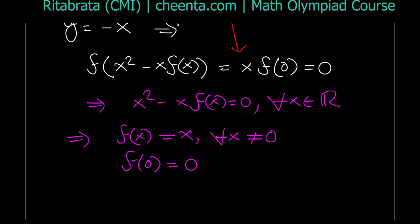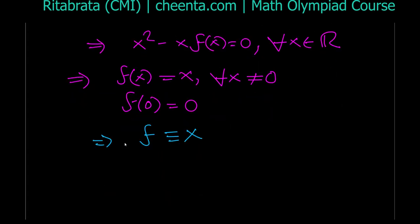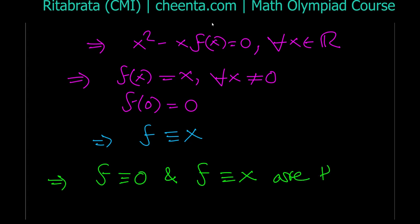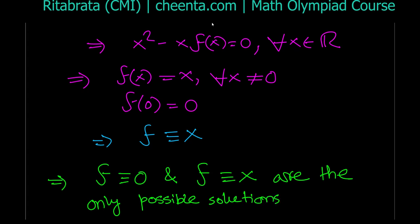We already know f(0) = 0, so f(x) = x holds for all x including zero. This implies f is identically equal to x. So we have proved: if f is not identically 0, then f must be identically x. Therefore the only possible solutions are f ≡ 0 and f(x) = x, and this ends the solution.